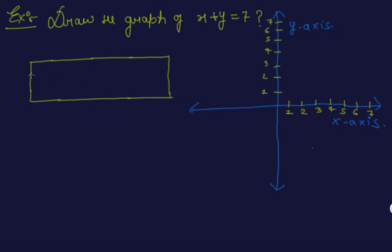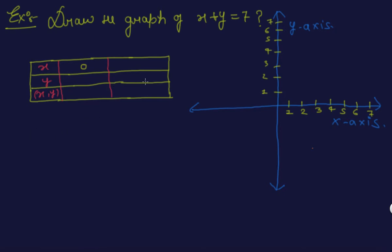Draw three rows for x, the value of y, and the ordered pair (x, y). Now take some values. If we take the value of x equal to 0, then put the value of x in the given linear equation: 0 plus y equal to 7, which gives the value of y equal to 7. So the ordered pair is (0, 7).